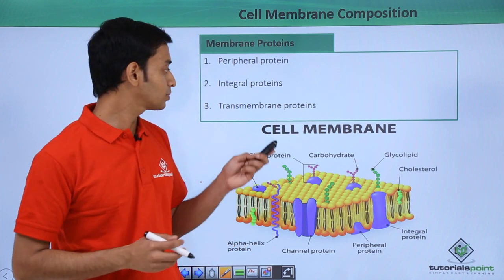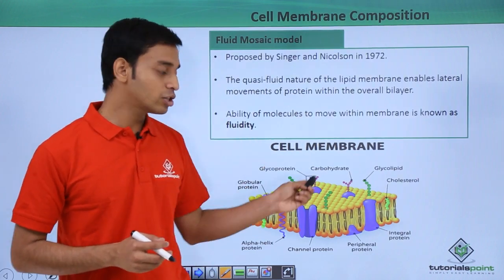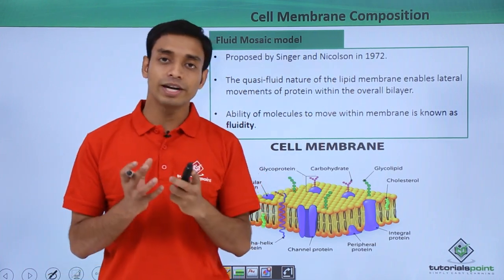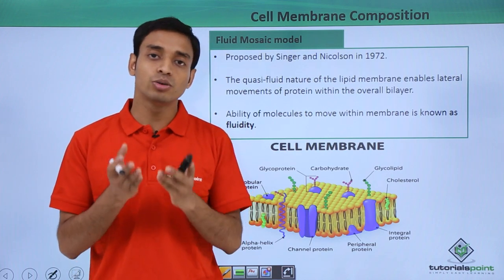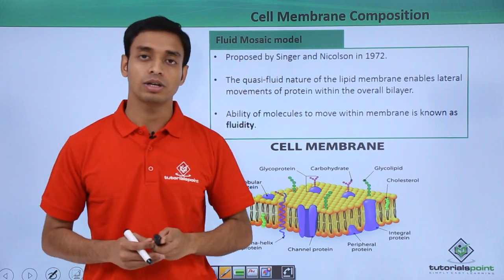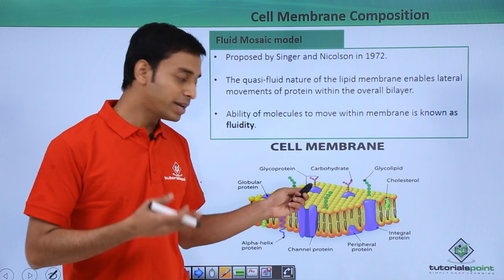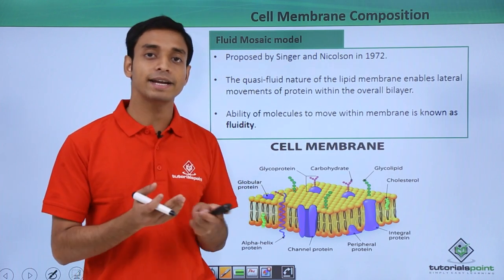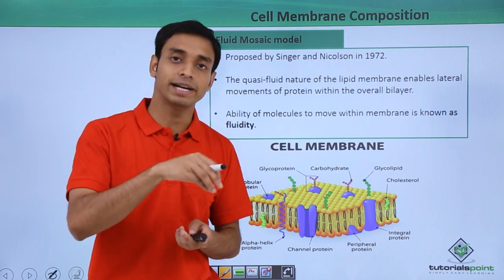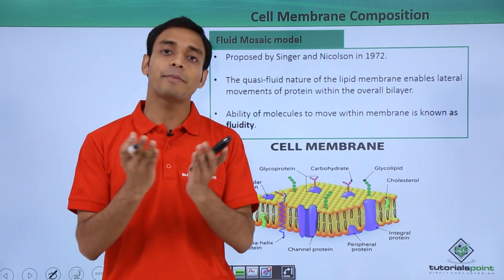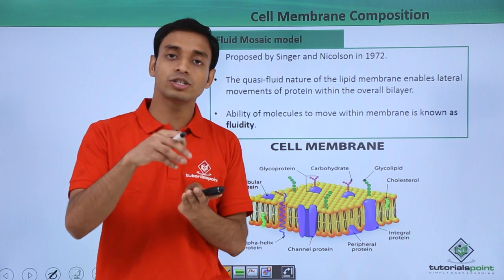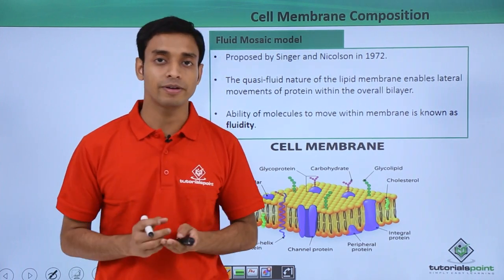Based on these observations, two scientists named Singer and Nicolson in the year 1972 put together these findings and proposed a model structure for the cell membrane, known as the fluid mosaic model. According to their model, the basic structure is made up of lipid molecules, and within this structure proteins and carbohydrates are embedded, giving a mosaic-type appearance.